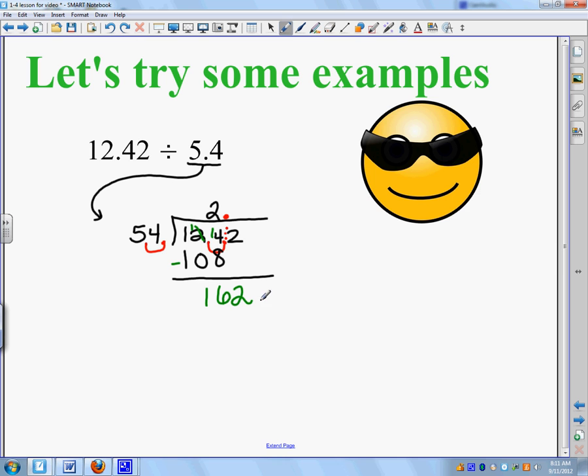54 goes into 162. I'm going to guess about 3 times, because it's 50 plus 50 plus 50. So, let's guess 3 times. 54 times 3. 3 times 4 is 12. 3 times 5 is 15. 162. So, it worked out perfectly. So, our answer was 2.3. Make sure you have this whole example written down in your notes, so you can refer back to it.